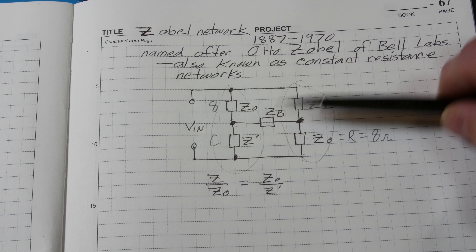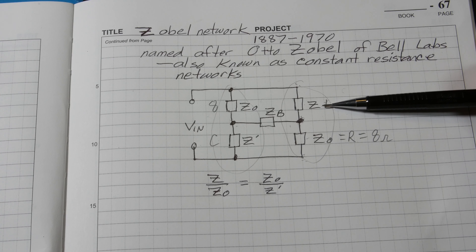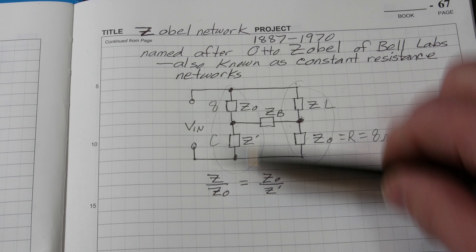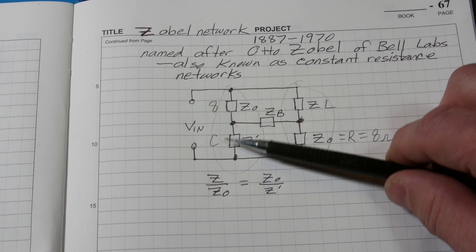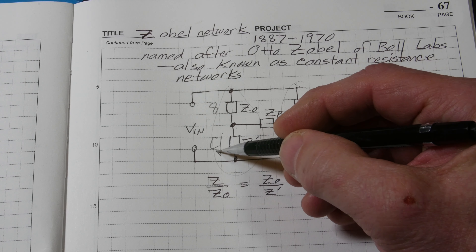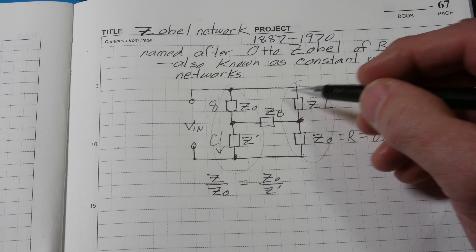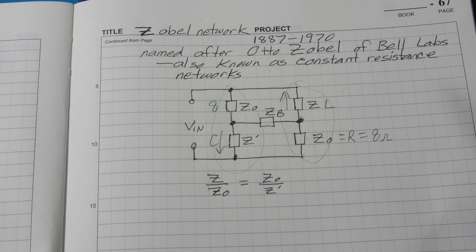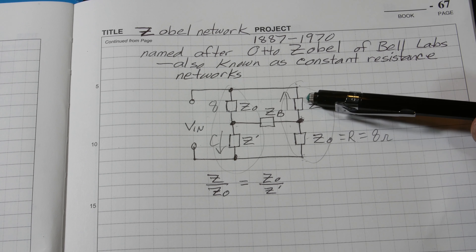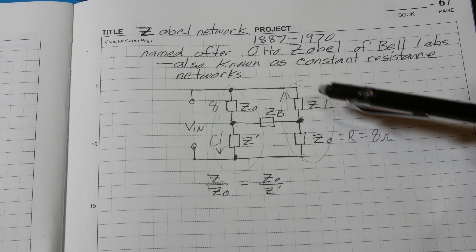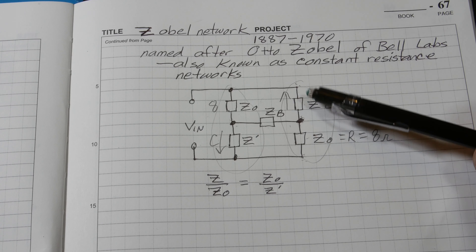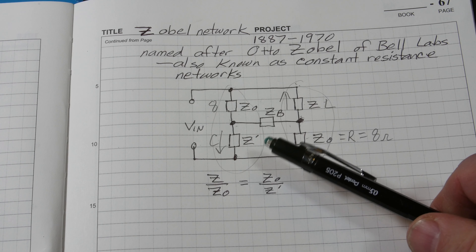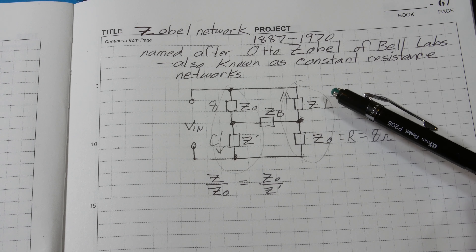It gets a little more complex because of the placement. When you place it on the output of an amplifier, more ideally you place it in front of a bass speaker, subwoofer, or midrange speaker and match it to that speaker. Some people call it the Boucherot cell — it's a French name. The Zobel network is commonly referred to as a Boucherot cell when it's used at the output of an amplifier.